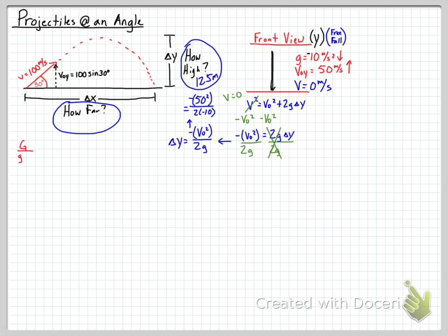That's how we solve a free-fall question to find how high something goes — it's basically the same as throwing something up in the air and having it come straight back down. Next, we're going to determine how far it travels. We know gravity is 10 m/s², the initial velocity upward is 50 m/s, and the change in y is zero meters. Since velocity and acceleration are in opposite directions, we use negative 10 for gravity.